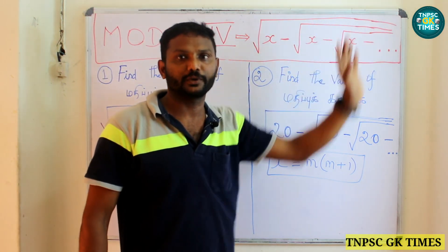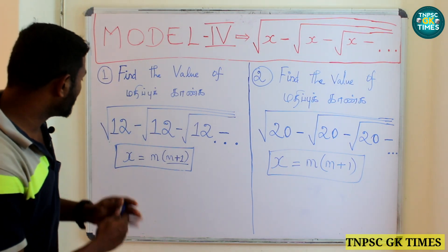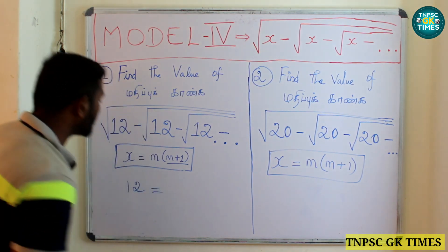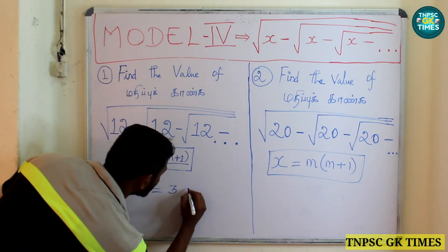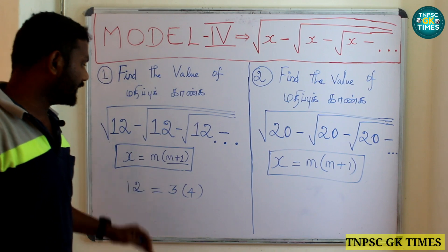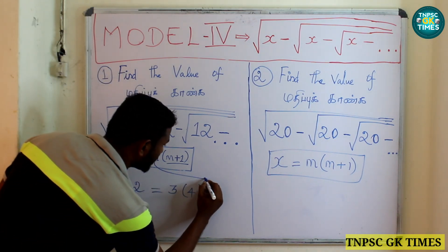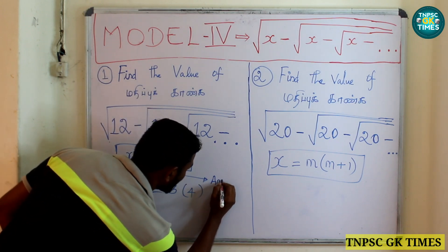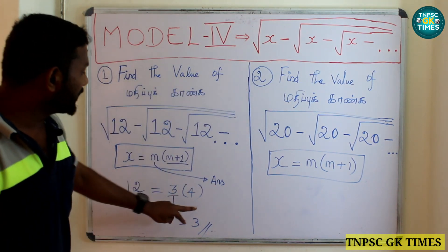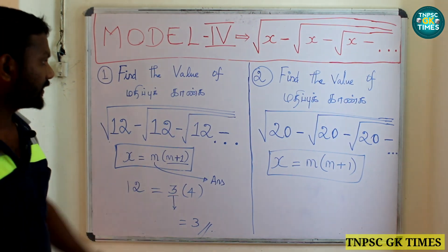Now for the subtraction model: square root of x minus square root of x minus square root of x, up to infinity. Assume x = 12. 12 = 3 × 4, so m = 3 and m + 1 = 4. For addition the answer is m + 1 (the biggest term); for subtraction the answer is m (the lowest term). So for subtraction with x = 12, the answer is m = 3.